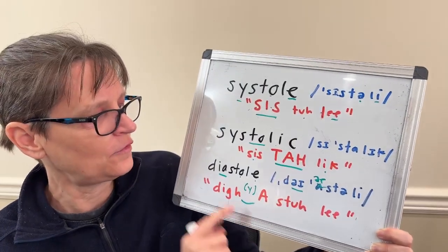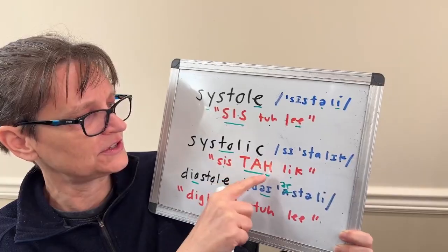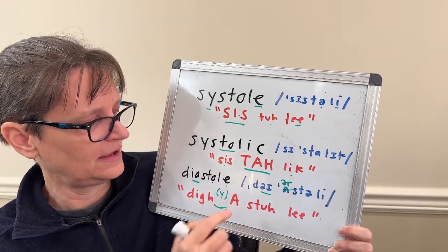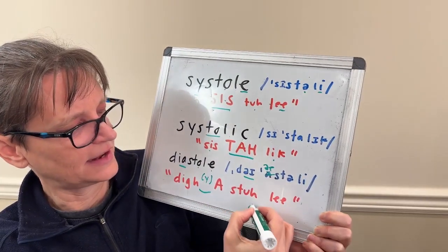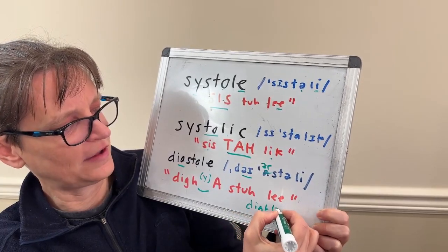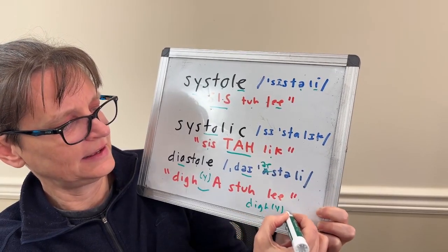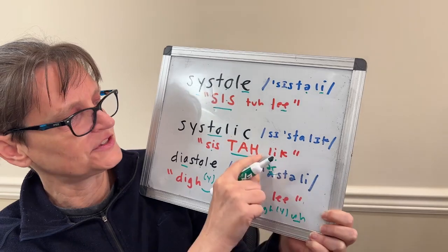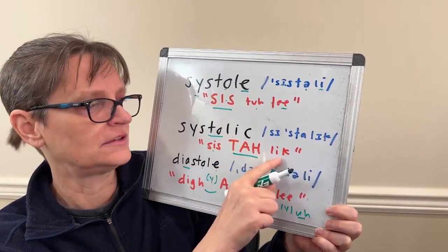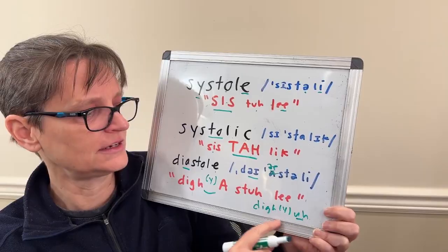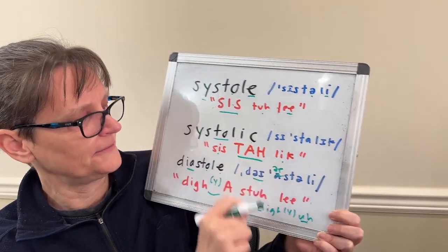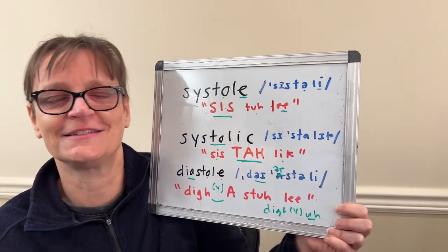And then for diastolic, it's just the same as we have the di — it'll sound like di-ah. So our same vowel-vowel linking, and then our same ending as systolic: di-a-stolic. So stolic, diastolic, systolic, and diastole and systole.